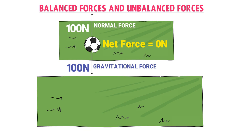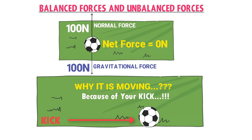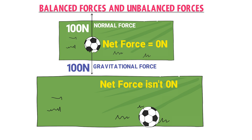Now consider another case: you kick the football, and it starts moving — more precisely, it is accelerated. Why is the football now moving? It is because of your kick. Although the vertical forces are balanced, when you kick it you exert enough horizontal force that the net external force is no longer zero. The football therefore starts moving and accelerates in the horizontal direction. When the net force on an object is not zero, we call it unbalanced forces.